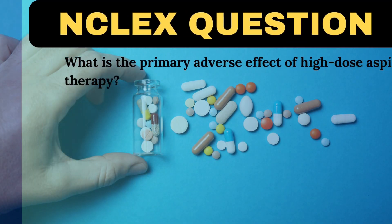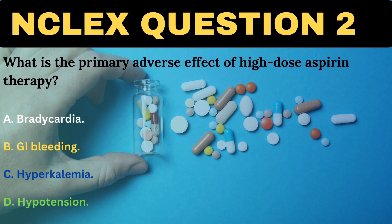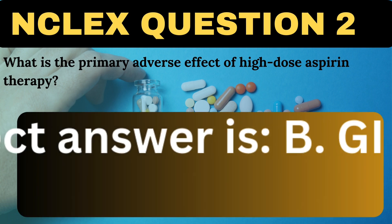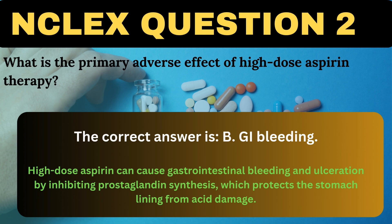What is the primary adverse effect of high-dose aspirin therapy? A. Bradycardia. B. GI bleeding. C. Hyperkalemia. D. Hypotension. The correct answer is B, GI bleeding. High-dose aspirin can cause gastrointestinal bleeding and ulceration by inhibiting prostaglandin synthesis, which protects the stomach lining from acid damage.